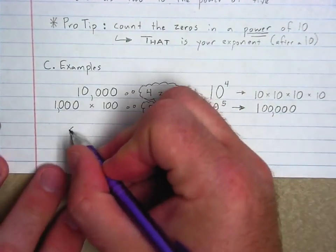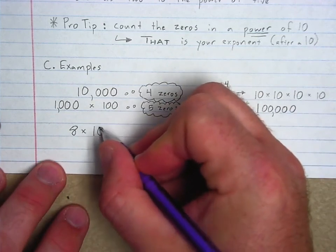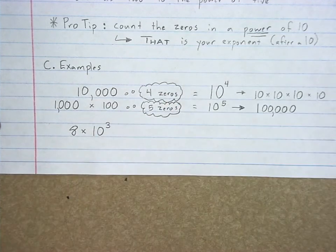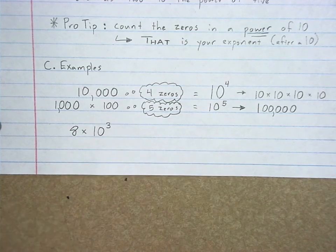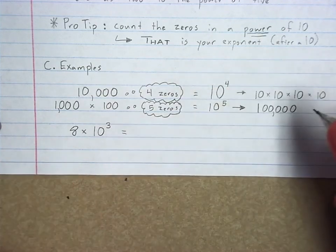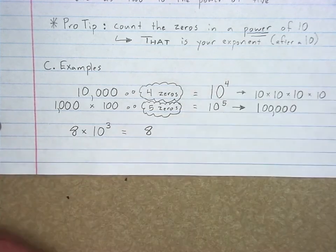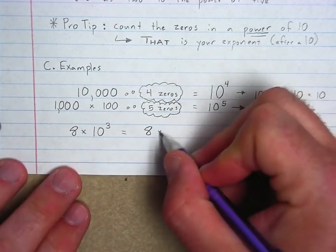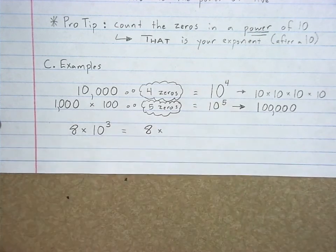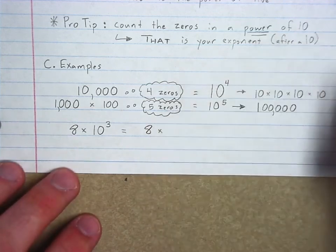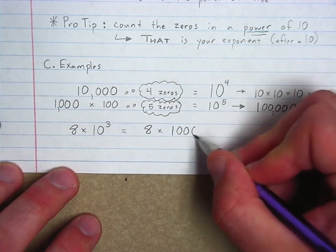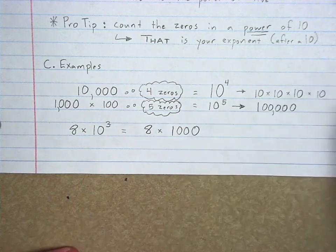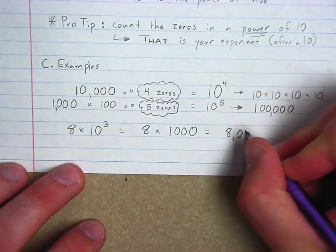Now we're going to see some problems to work out. I'll mention — if you've ever heard of scientific notation — this is very useful in science when we're dealing with very big or very small numbers. For example: 8 × 10³. All you do: eight stays as eight. Change ten to the third power to a one with three zeros after it — that's 1,000. So eight times one thousand equals eight thousand.